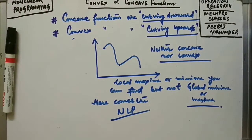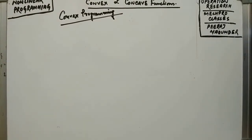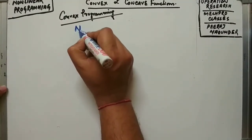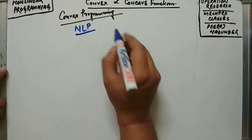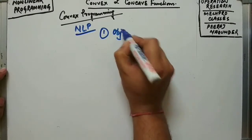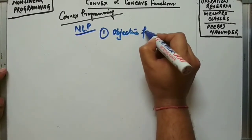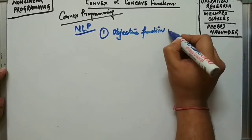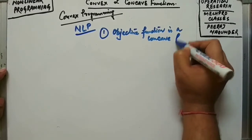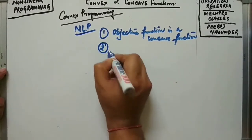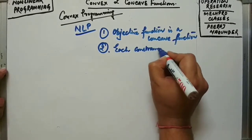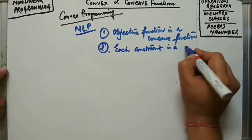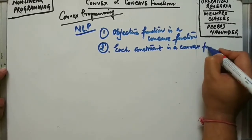Let us discuss convex programming. A nonlinear program (NLP) becomes a convex program when two conditions hold: first, the objective function is a concave function; and second, each constraint is a convex function.